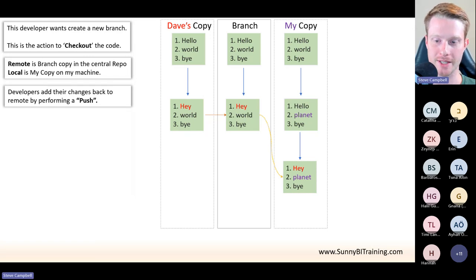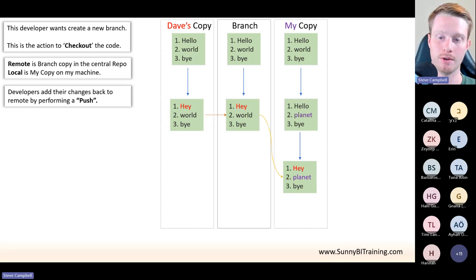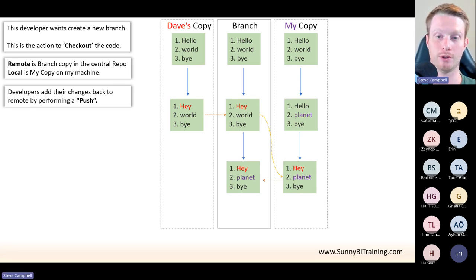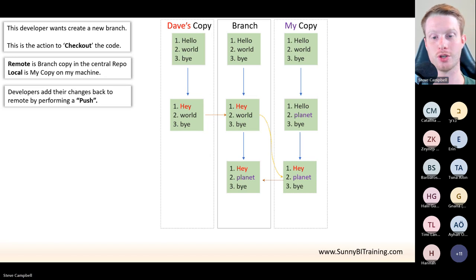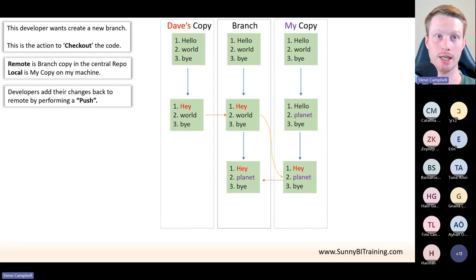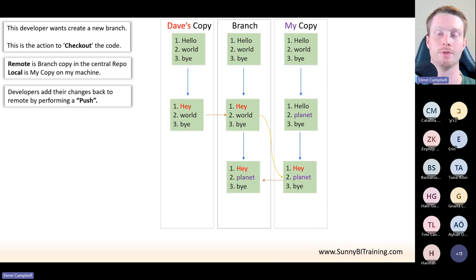Then I see the final code: 'hey planet bye'. And this is actually what our feature was — this is what we were asked to do. So I'm going to push my changes back up as well. Our final code is 'hey planet bye', incorporating both my changes and Dave's changes. So this push and pull is a way for us to communicate because we're working individually.